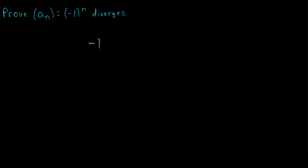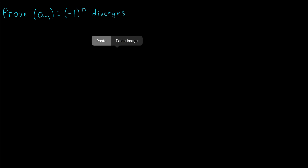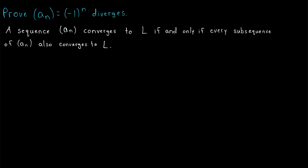That's because this sequence looks like this — it doesn't diverge to positive or negative infinity, it oscillates between 1 and negative 1. So to prove a sequence like this diverges, you can't use those diverging-to-infinity definitions. But now that we've spent some time studying subsequences, we've got another, much more slick way to prove that a sequence like this diverges.